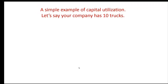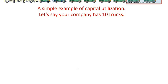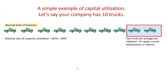Let's use a simple example. Suppose a company has 10 trucks. During normal times, you're not going to use all of those trucks — some will be sidelined. Let's say two trucks on average are reserved for repair or normal maintenance. So the natural rate of capacity utilization is 8 out of 10, or 80%.